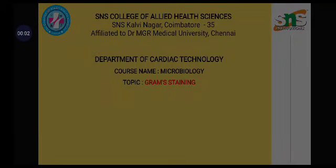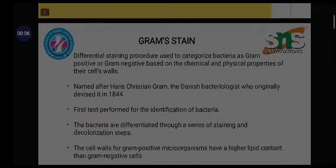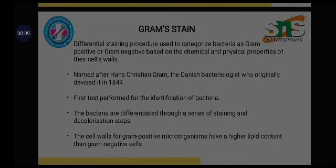Today we are going to see the topic Gram staining. Gram staining is a type of differential staining procedure mainly used to categorize bacteria as gram positive or gram negative, based on the chemical and physical properties of their cell wall. The cell walls of gram positive microorganisms have higher lipid content than gram negative cells. It was first discovered by Hans Christian Gram in 1884.